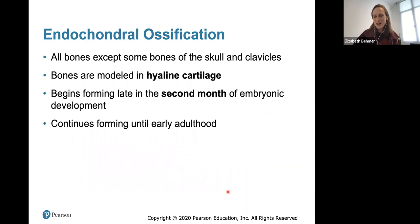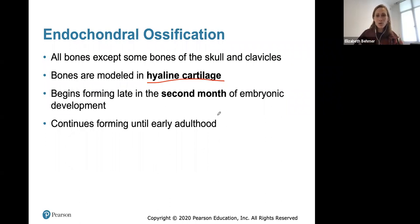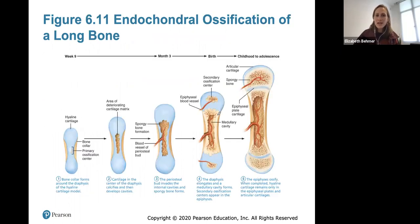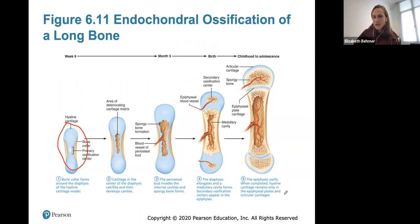All bones except some skull bones and clavicles are modeled in hyaline cartilage — this is endochondral ossification. It begins late in the second month of embryonic development and continues until early adulthood, around 18 years old, when bones are still changing and growing in length. In endochondral ossification of a long bone, we start with a hyaline cartilage model, then bone grows in length as the periosteal bud invades internal cavities, spongy bone forms, and secondary ossification centers appear in the epiphyses.